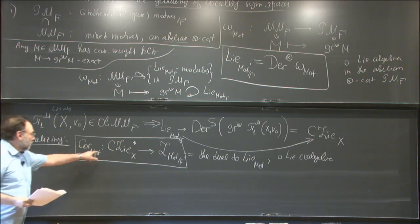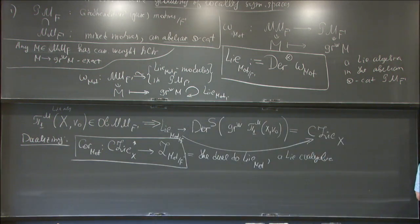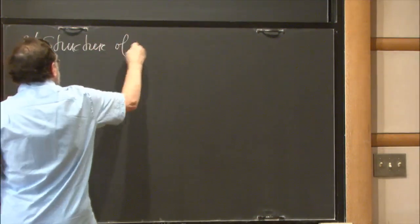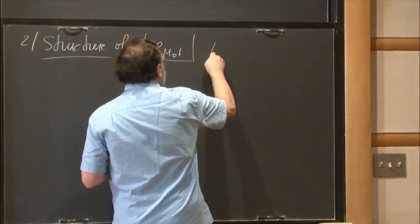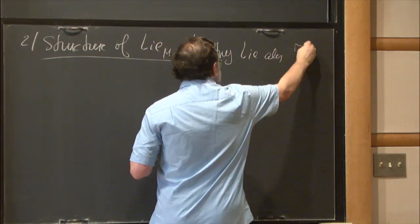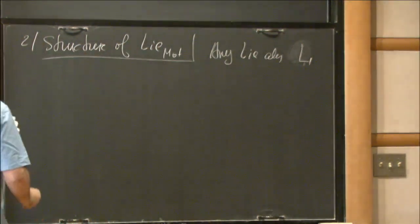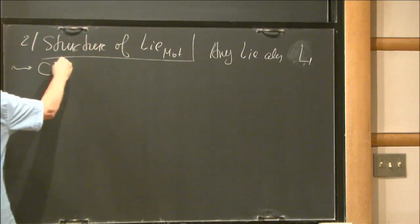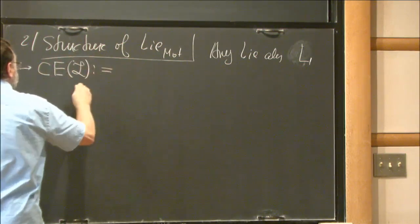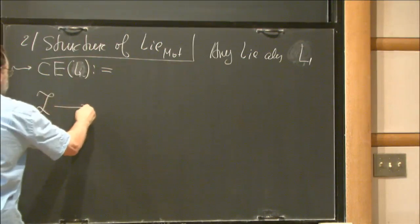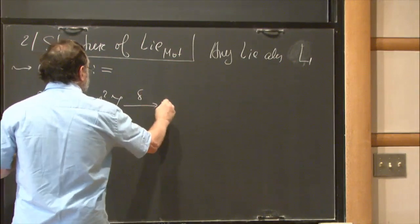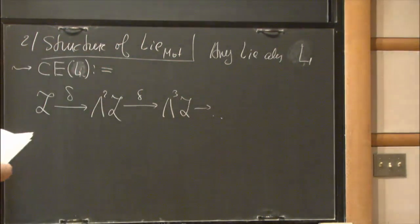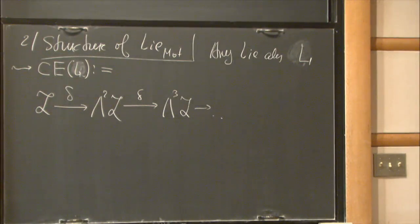Before proceeding to motivic correlators, I need to say a bit about the structure of this motivic Lie algebra. This is basic formalism: if you have any Lie algebra L, you can assign to it the standard Cartan-Eilenberg complex of L. By definition, it takes the dual of this Lie algebra and maps it to the second exterior power via the dual of the commutator map, then extends by the Leibniz rule to maps to Λ³ and so on.